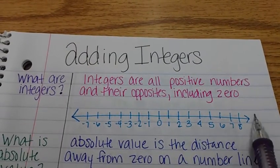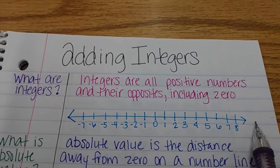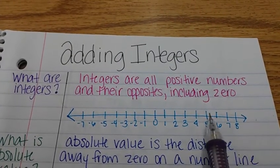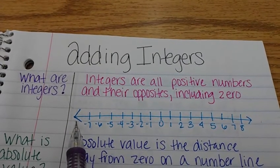The farther right you go on a number line the more value it has and the reverse is also true. The farther left you go on a number line the less value it has.